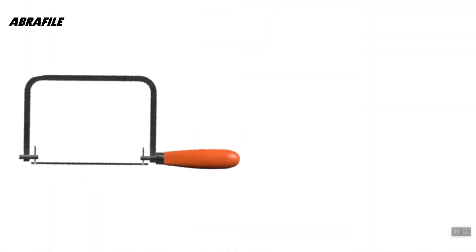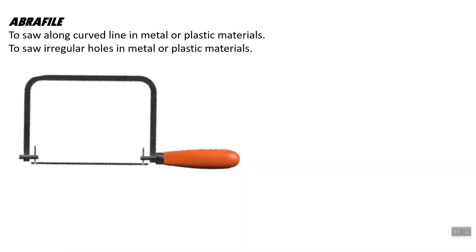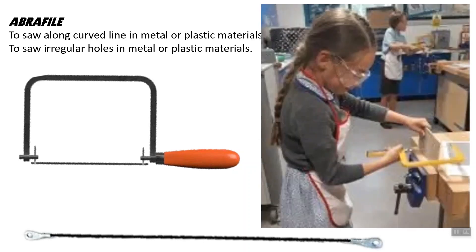To cut curves into thin metal sheets, we use an abrafile. It is similar to a coping saw — in fact it uses the same frame as the coping saw, but the blade is replaced by a special blade called an abrafile. The abrafile is used to saw along curved lines into metal or plastic materials, and to saw irregular holes in metals or plastic. So to cut curves where the lines are not straight, we use an abrafile. For wood we use a coping saw; for metal we use an abrafile — only the blade is different. The workpiece is held in a bench vise, and we use the abrafile to cut the shape we want into the metal sheet.